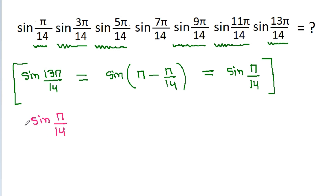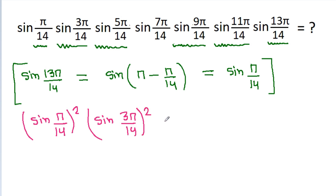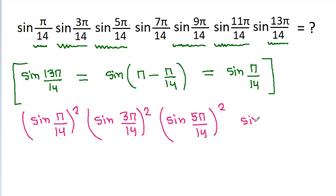So this becomes sin²(π/14) times sin²(3π/14) times sin²(5π/14) times sin(7π/14), and 7π/14 is π/2, so sin(7π/14) equals 1.